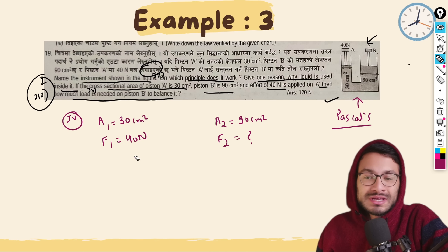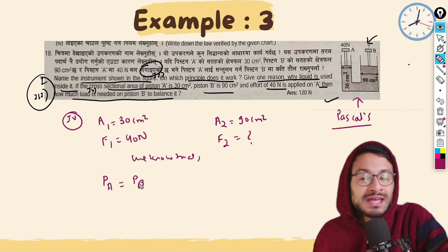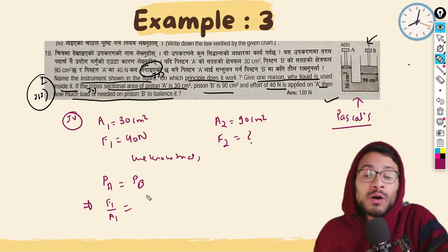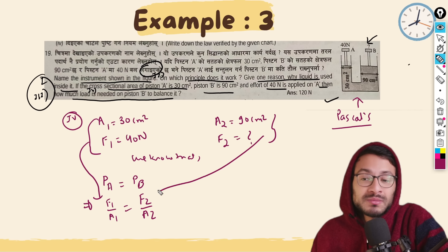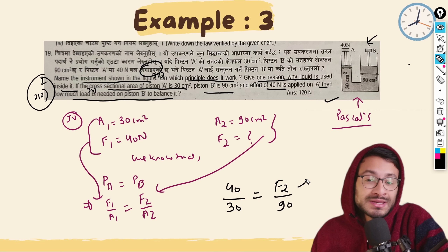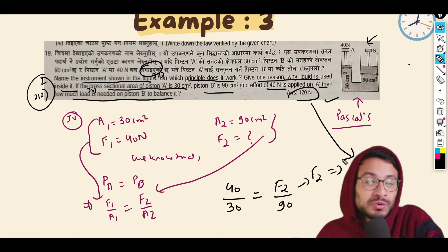The instrument is a hydraulic lift, and the law of pressure is applicable. We know that pressure on piston A equals pressure on piston B. The pressure formula is F1 by A1 equals F2 by A2. Substituting: F1 is 40 N, A1 is 30 cm², and A2 is 90 cm². By cross multiplication, we calculate F2.